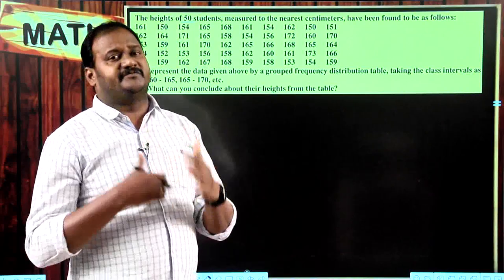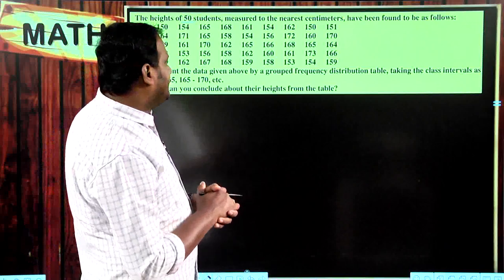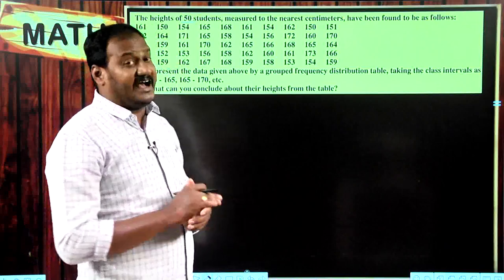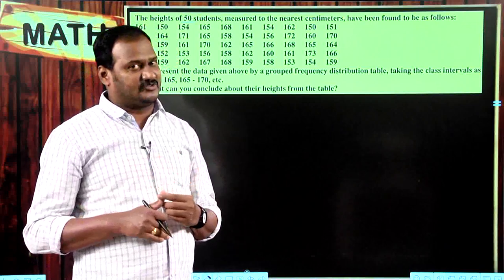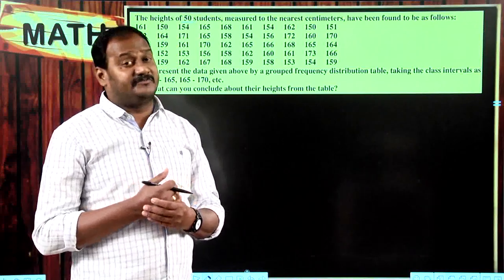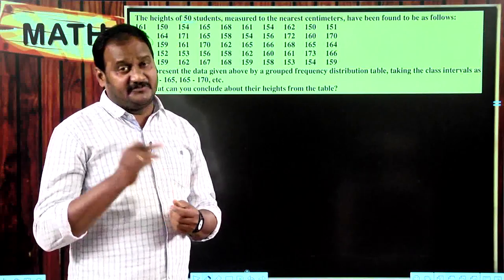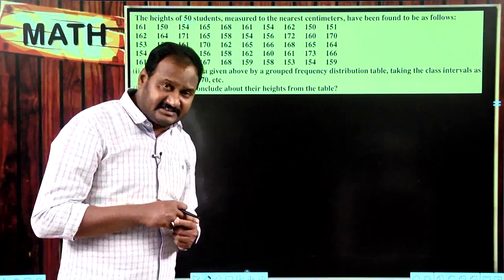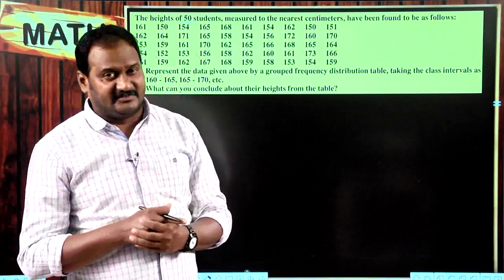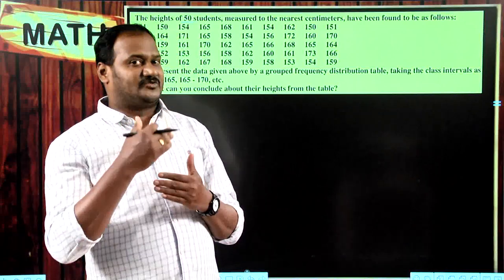I am going to find out what is the highest score and what is the lowest score, because I need to find the total number of class intervals. The formula to find the total number of class intervals is equal to range divided by class width. Here, 160 to 165, 165 to 170, 170 to 175 — the range is going to be only 5.